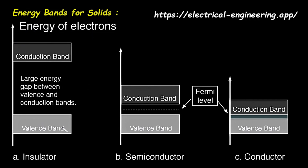Imagine electrons in an atom are like people living in a large apartment building. The valence band is like the floor where everyone has their own apartment. The electrons in the valence band are bound to their individual atoms — they have a certain amount of energy, but they are not free to roam around the entire material. They are essentially at home. Now, imagine there's a higher floor in this building, an open concept floor with lots of empty space where people can move around freely. This is the conduction band.